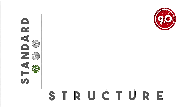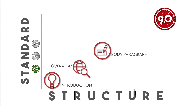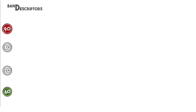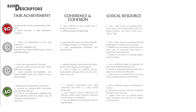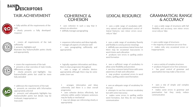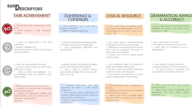Moving on, the standard structure in writing a line graph report includes introduction, overview, body paragraph 1, and body paragraph 2. Before we start, we need to check the given writing band descriptors for band 6 and band 9. We have task achievement, coherence and cohesion, lexical resource, and grammatical range and accuracy. In this way, it would be easy for you to identify which example has a 6.0 or 9.0 band score as we go over the examples later on.